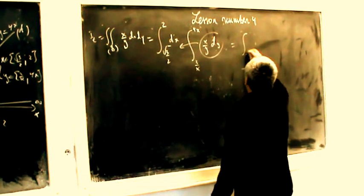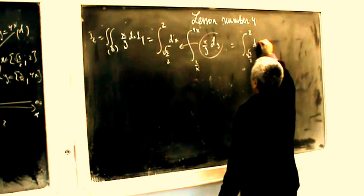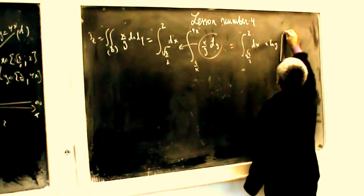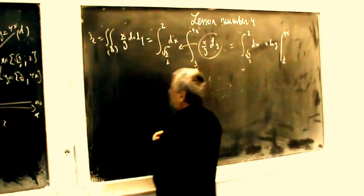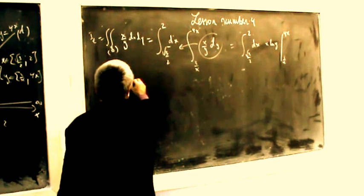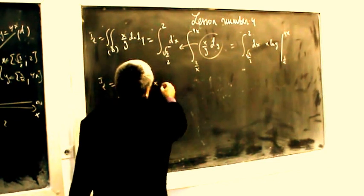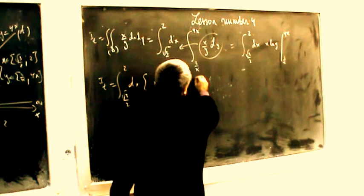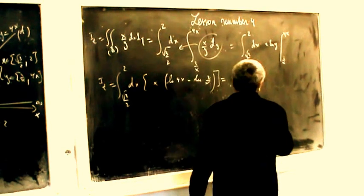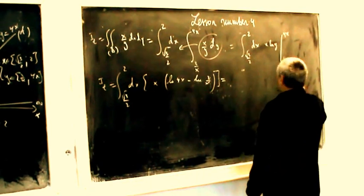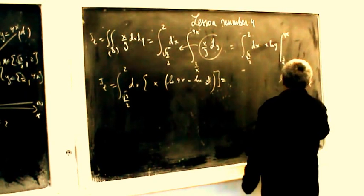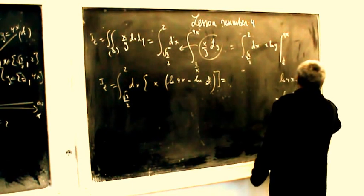This equals the integral from radical 3 divided by 2 to 2, dx, times the inner integral — evaluating the number of y from y equal to 3/x to y equal to 4x. The n total equals the integral from radical 3 divided by 2 to 2, with y evaluated from 3/x to 4x, yielding terms divided by 3.